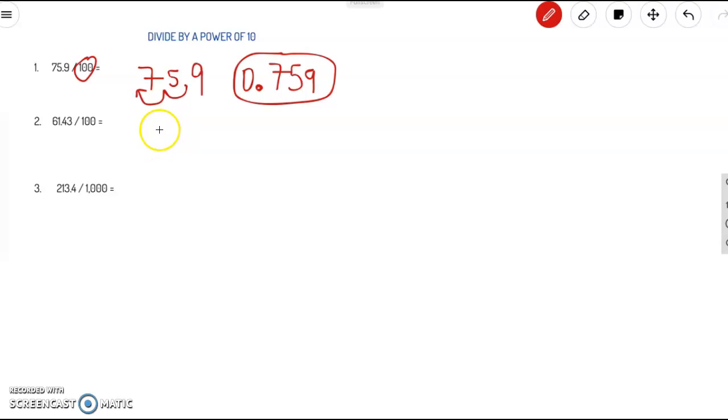Next one. 61.43 divided by 100, which has two zeros. So we're going to move left. And so our answer will become 0.6143.